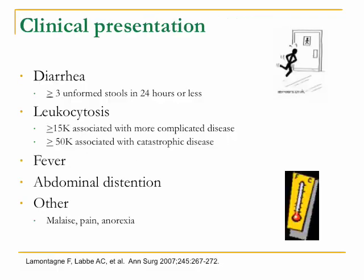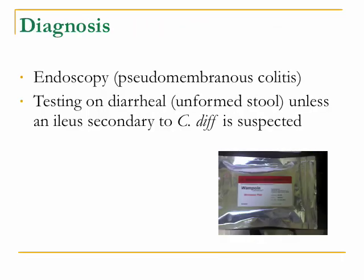The new guidelines define diarrhea as greater than 3 unformed stools in 24 hours or less. Leukocytosis with WBC ≥15,000 is associated with more complicated disease; WBC >50,000 is associated with catastrophic disease. Patients may present with fever, abdominal distension, malaise, pain, and anorexia. Diagnosis can be made by endoscopy with evidence of pseudomembranous colitis, or testing of diarrheal stools, unless an ileus is present.